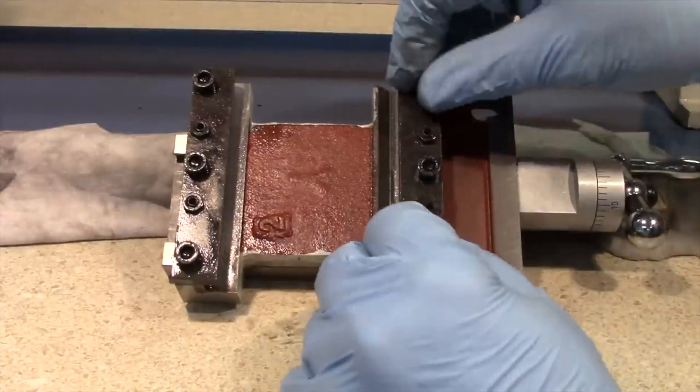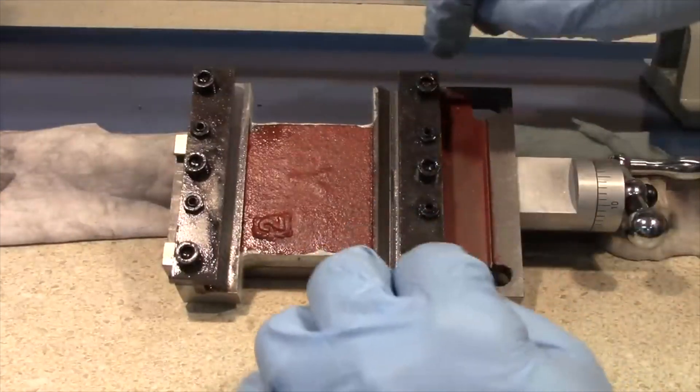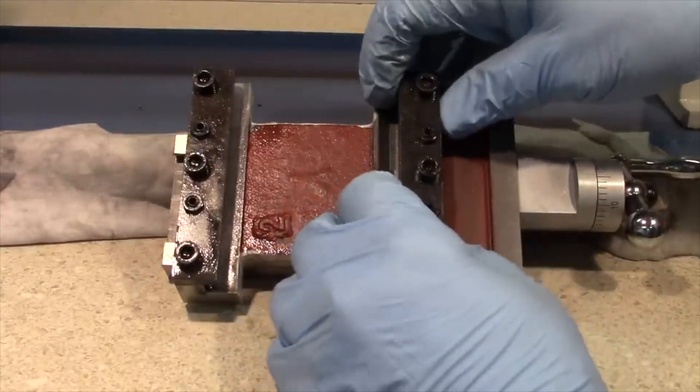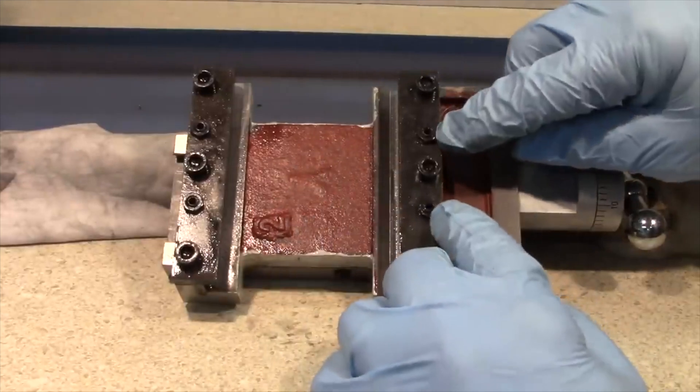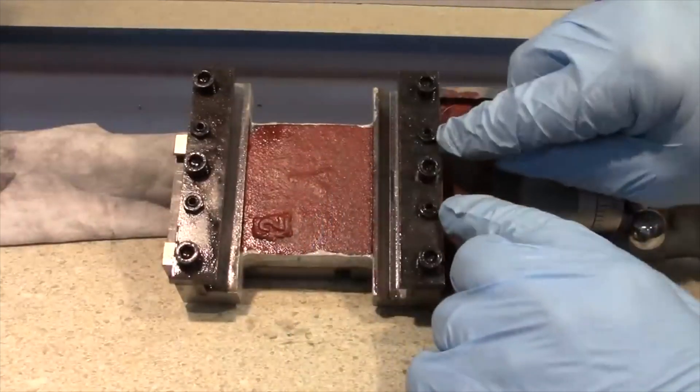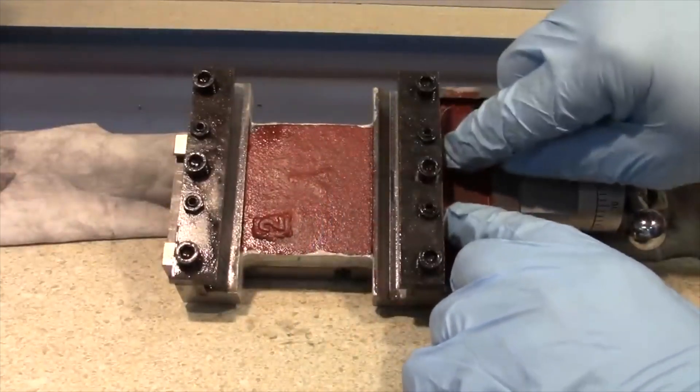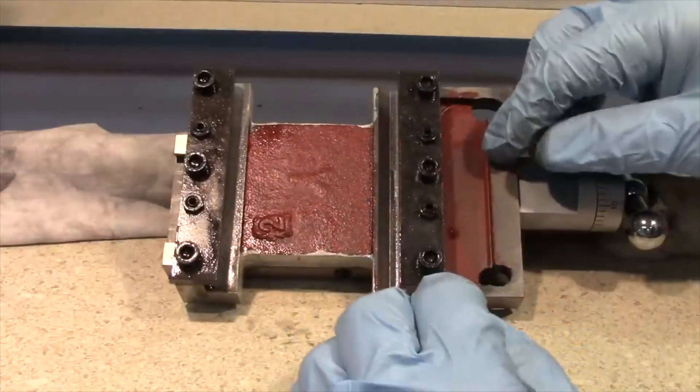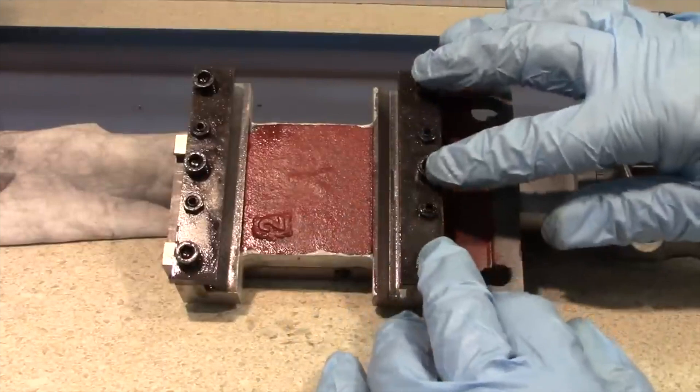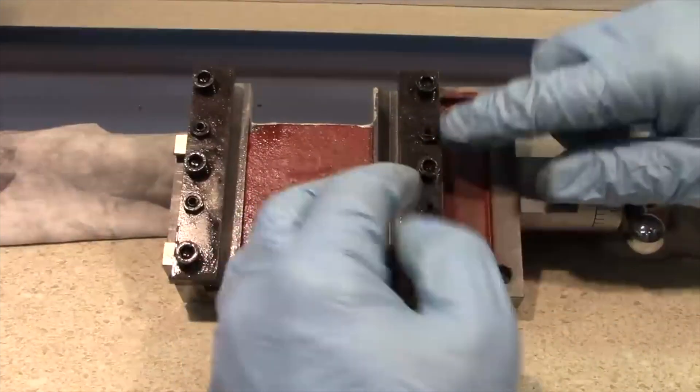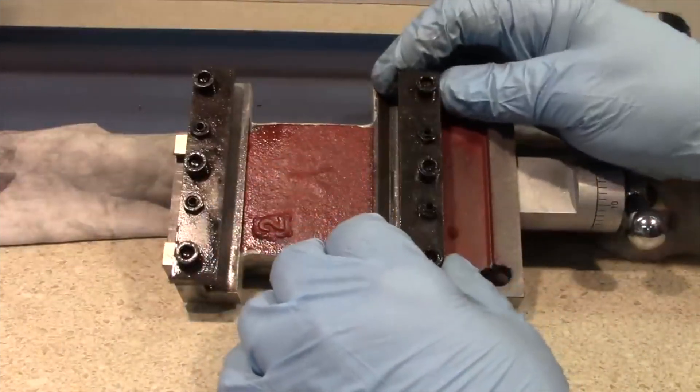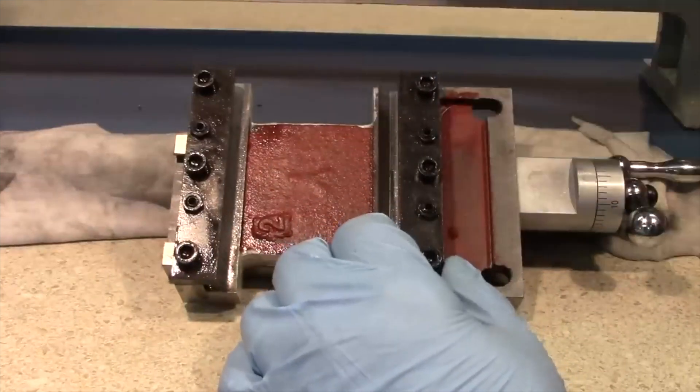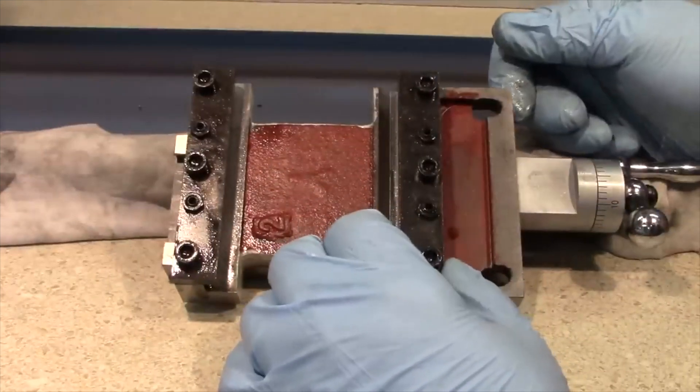These three cap head screws here push the plate upward, which has the effect of tightening the plate against the underside of the ways, whereas these two set screws with the lock nuts set a limit so that the plate can't go beyond a certain point. When you make this adjustment, you're actually working these three screws against these two and trying to get a balance where you have just enough clearance but no more than you need to freely move the saddle along the ways.